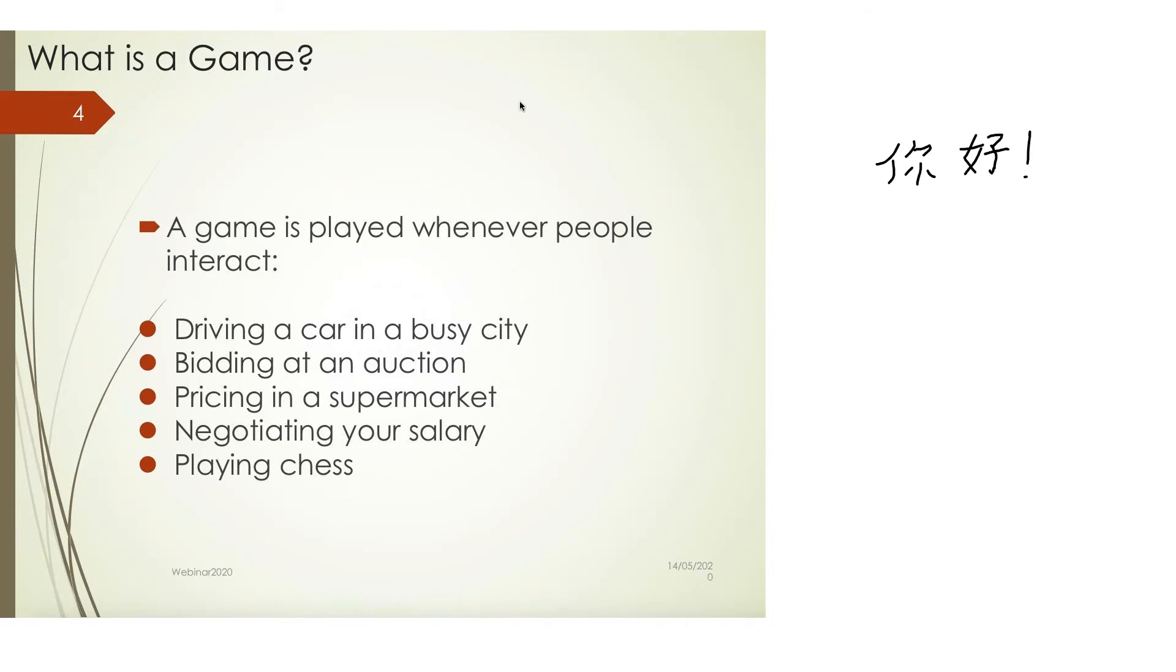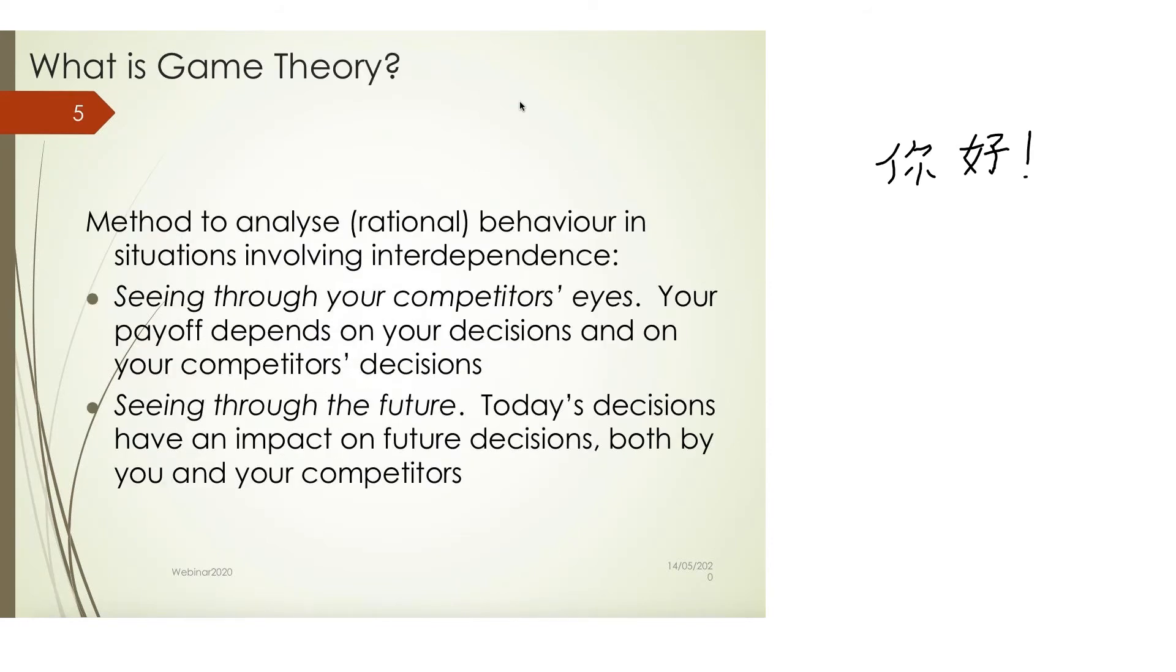This is the case when you bid at an auction. Whether you get the object or not depends not only on the offer that you make, but also on the offers that your opponents make. Because typically in an auction, you win the object if and only if the offer you make is higher than what your opponents bid. But pricing in a supermarket is a game because you compete in a small market, say in an oligopoly. Negotiating your salary is a game because that is a bargaining game. So all these situations have in common the fact that the payoff displays an amount of interdependence. So what happens to you depends essentially on what others do, as well as on your own choice.